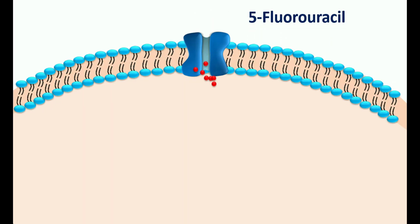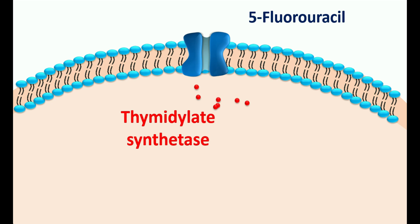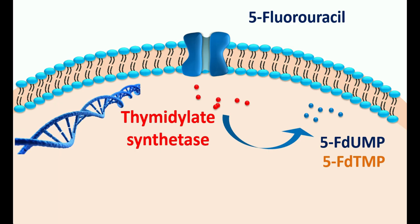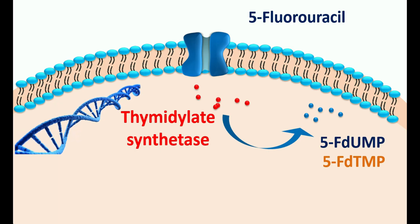5-fluorouracil can enter into the cells by facilitated transport. Within the cells, 5-fluorouracil can interact with one of the enzymes, thymidylate synthetase. This enzyme is responsible for conversion of uracil into thymidine analogues. Since 5-fluorouracil is an analog of uracil, it is going to be converted into metabolites like 5-fluorodeoxyuridine monophosphate as well as 5-fluorodeoxythymidine phosphate. These two are false metabolites which are not useful for DNA synthesis.